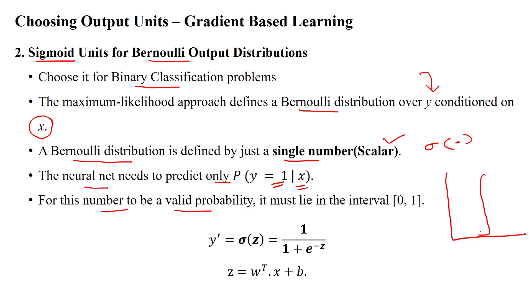For this scalar value to be a valid probability, it should lie in the interval [0, 1]. The sigmoid activation function always gives a value between 0 and 1, with a default threshold of 0.5. The equation is: sigmoid(z) = 1 / (1 + e^(−z)), where z = w^T x + b.